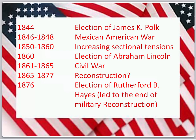As a big picture overview, here are some dates to remember. 1844 is the election of James K. Polk, one of the most underrated presidents in history. During his administration the Mexican-American War took place from 1846 to 1848. In the 1850s we focus on the increasing sectional tensions between the North and South, which will eventually culminate in the Civil War, but not before Lincoln is elected president in 1860. The Civil War itself is 1861 to 1865.